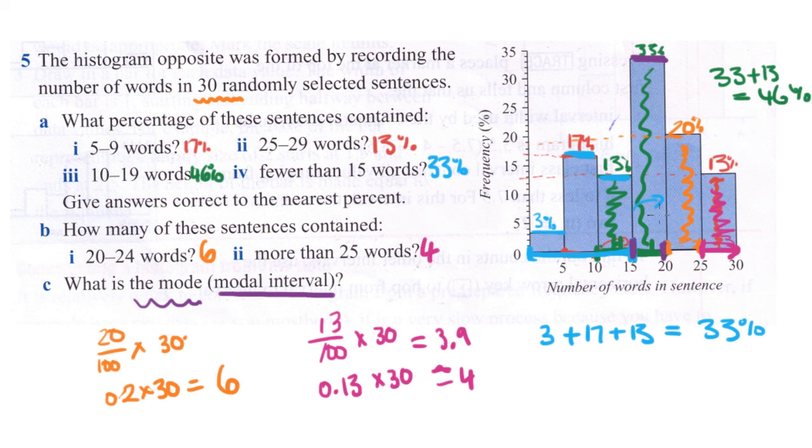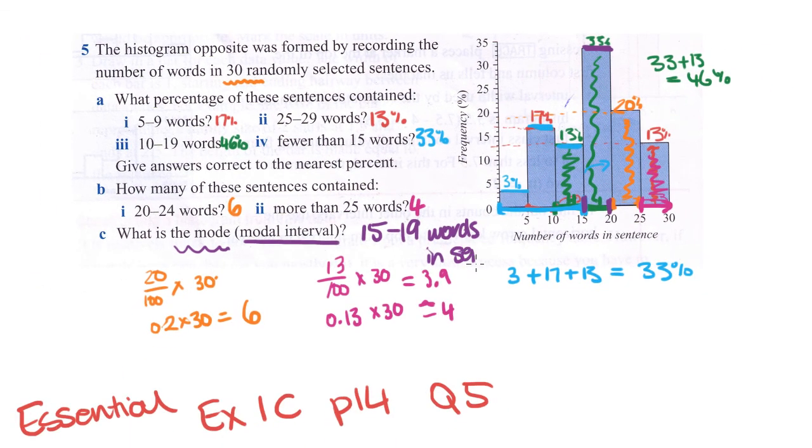We don't know if it was 15 or 16 or 17 or 18 or 19 because we can't tell, this data doesn't give us that information, but we know it fell somewhere within that range. So it's somewhere between 15 to 19 words in a sentence. And that's the answer.